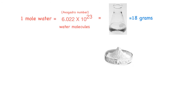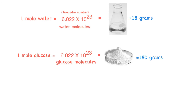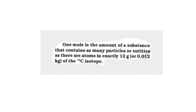Here is one mole of glucose, which weighs 180 grams. Since it's one mole of glucose, we already know that it has 6.022×10²³ glucose molecules in it. One mole is thus defined as the amount of substance that contains as many entities — atoms, molecules, or other particles...